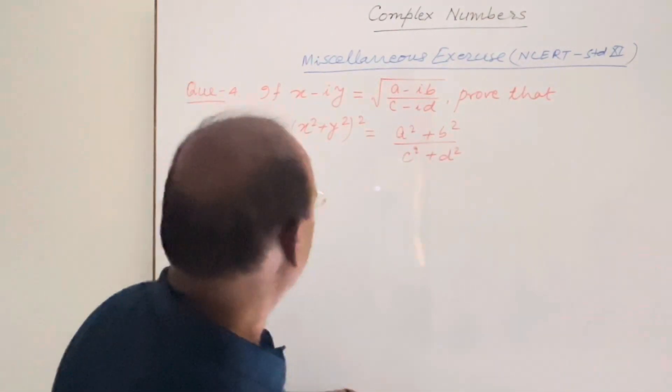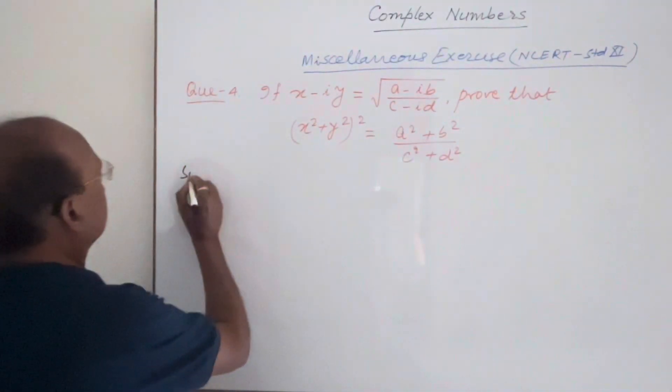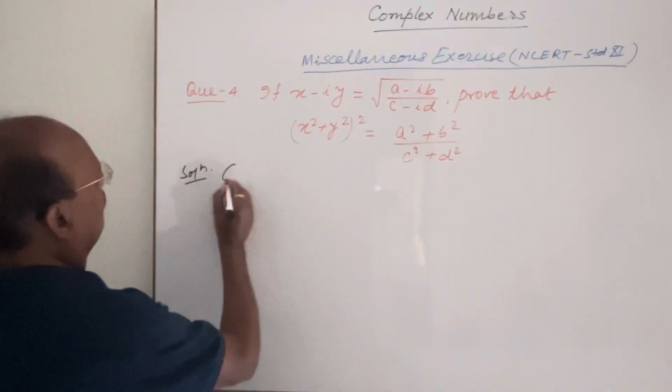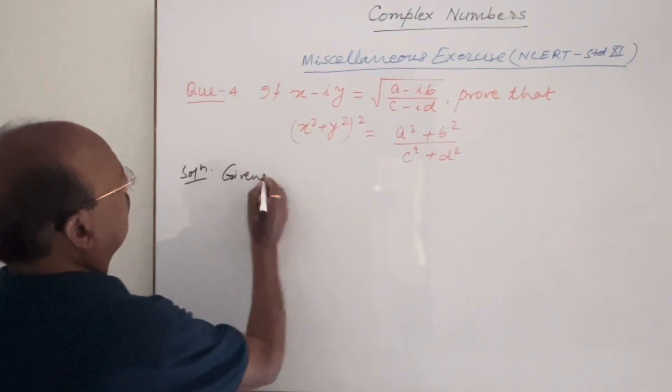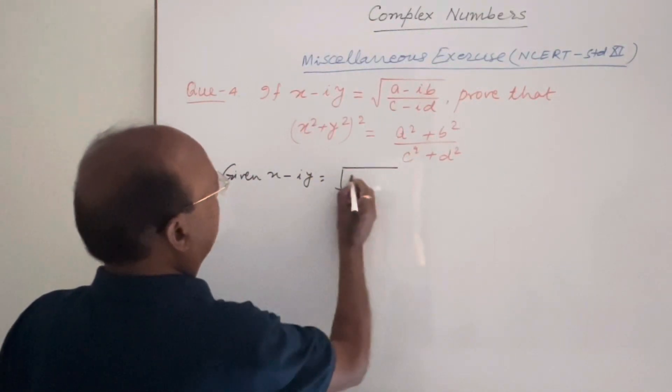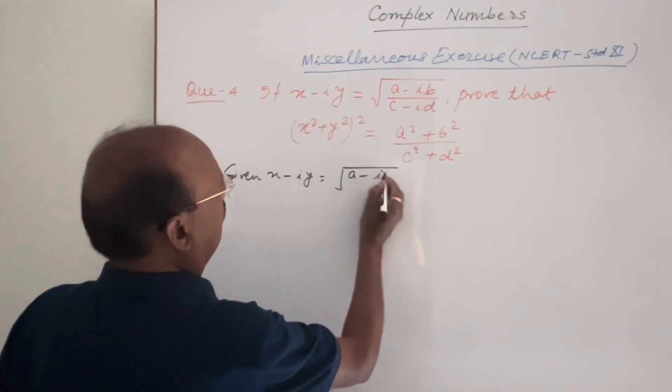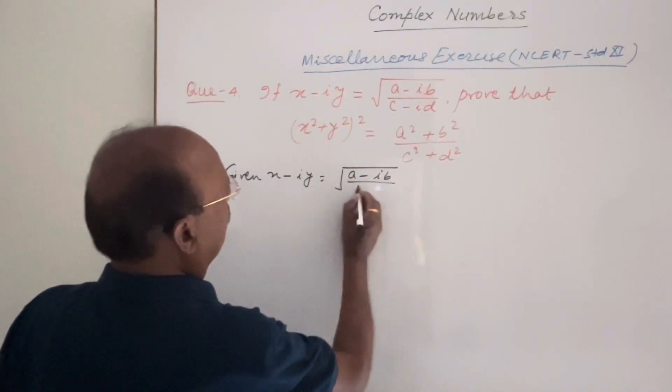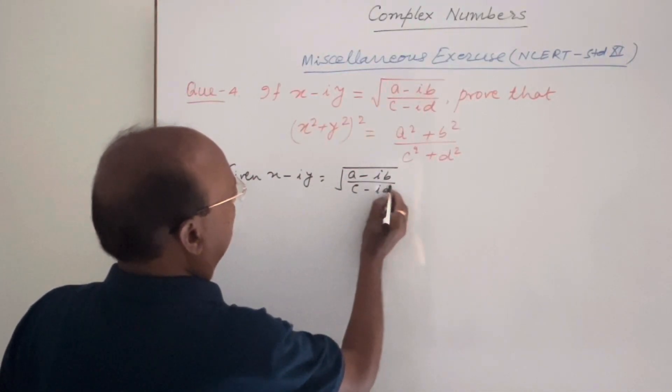So let us see the solution here. Here given that x minus iy is equal to root over a minus ib upon c minus id.